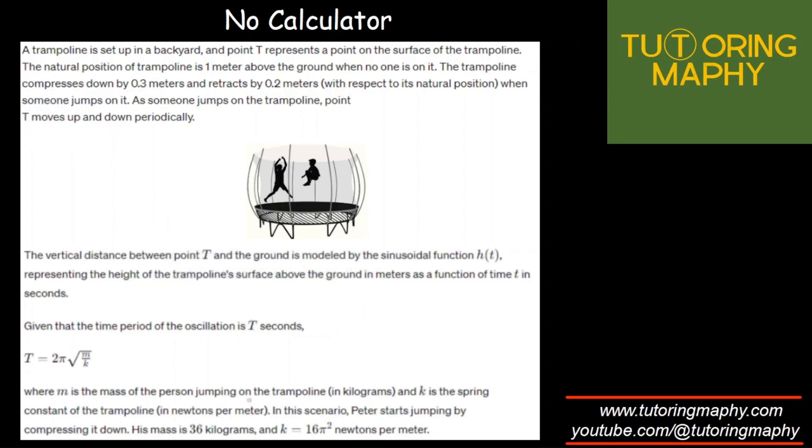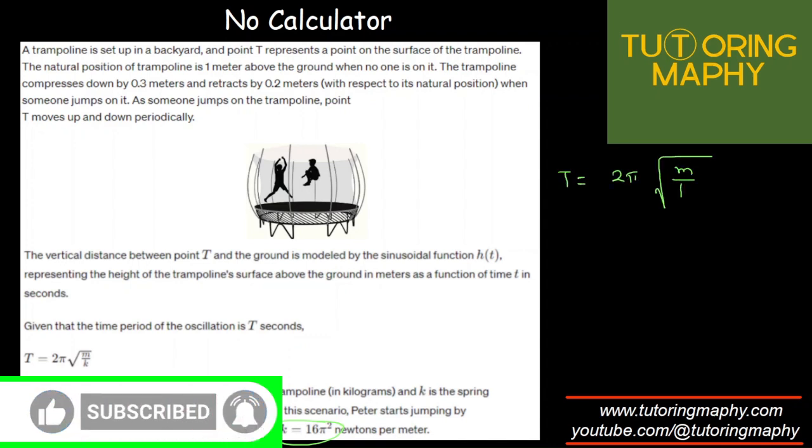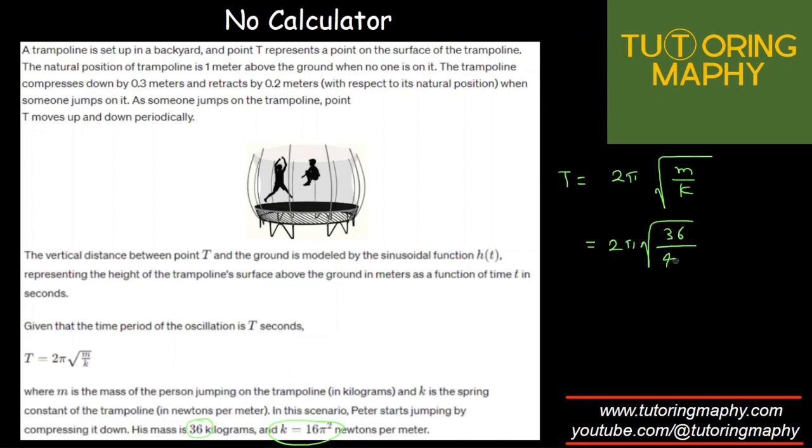Can we actually find the time period? Because we are given mass and K. Mind that this is no calc. So T equals 2π times the square root of M over K, where M is 36 and K is 16π². The square root of 36 is 6, the square root of 16π² is 4π. π cancels. 6 times 2 is 12, 12 divided by 4 is 3, so T equals 3 seconds. This is the period.